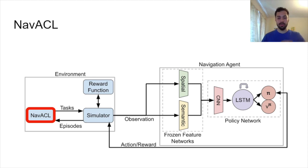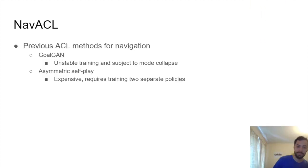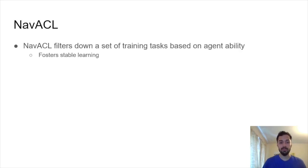Okay, now we're done talking about frozen feature networks. Let's start talking about NAVACL. This is our automatic curriculum learning framework. There are some previous ACL methods for navigation, and I won't get too in-depth here, but suffice to say that they're not ideal for our situation. The way NAVACL works is it filters down a set of training tasks based on agent ability, and this fosters more stable learning.